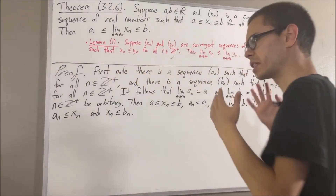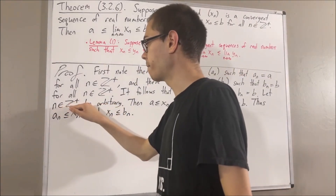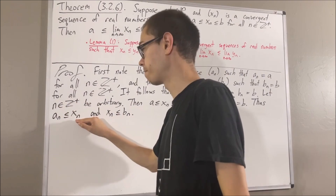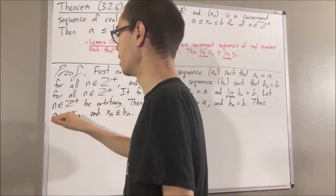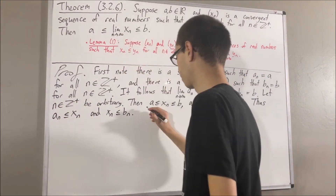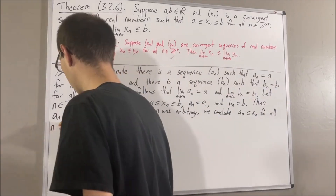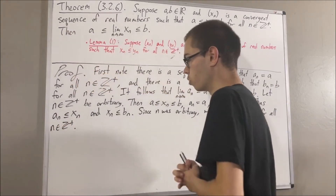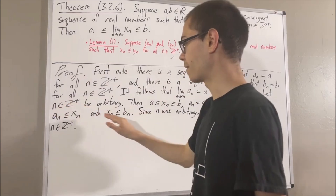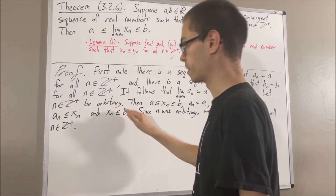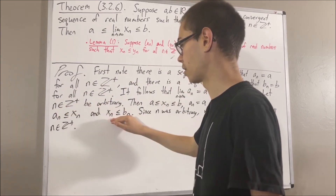So now let's put this together. We see that under the assumption n is a positive integer, it follows that an is less than or equal to xn. Since n was arbitrary, this means we have shown for all positive integers n, an is less than or equal to xn. Similarly, under the assumption n was a positive integer, we have that xn is less than or equal to bn. Since n was arbitrary, this means we have shown for all positive integers n, xn is less than or equal to bn.